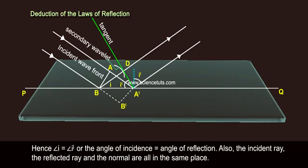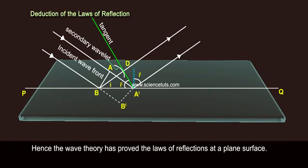Also, the incident ray, the reflected ray, and the normal are all in the same plane. Hence, the wave theory has proved the laws of reflections at a plane surface.